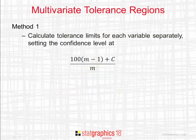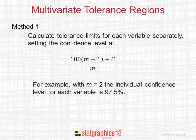I'm going to talk about two methods for estimating tolerance regions given data from a multivariate normal distribution. The first method calculates tolerance limits for each variable separately, setting the confidence level for each of the variables to 100 times m minus 1 plus c divided by m.